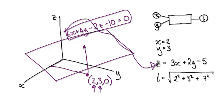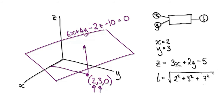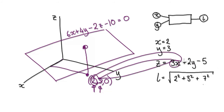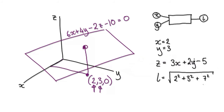Once you know X and Y, you can always jump to the height. So for example, let's say you've gone 2 across and 3 in the Y direction. Put X=2 into the plane equation — that gives 6. Put Y=3 in — that also gives 6. So 6 plus 6 is 12, take away 5, that's 7. So you're at a height of 7, meaning the point is (2, 3, 7).